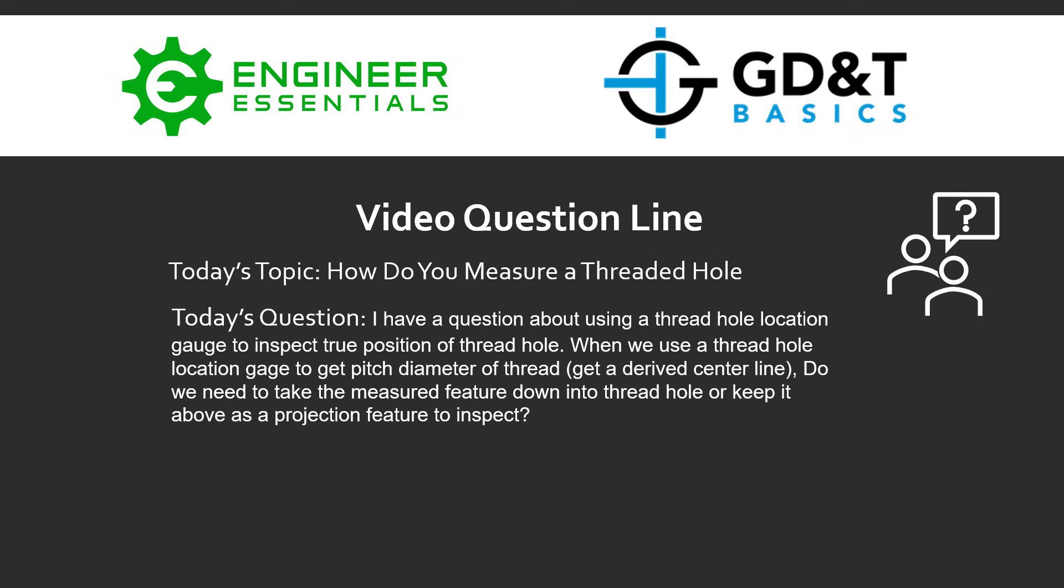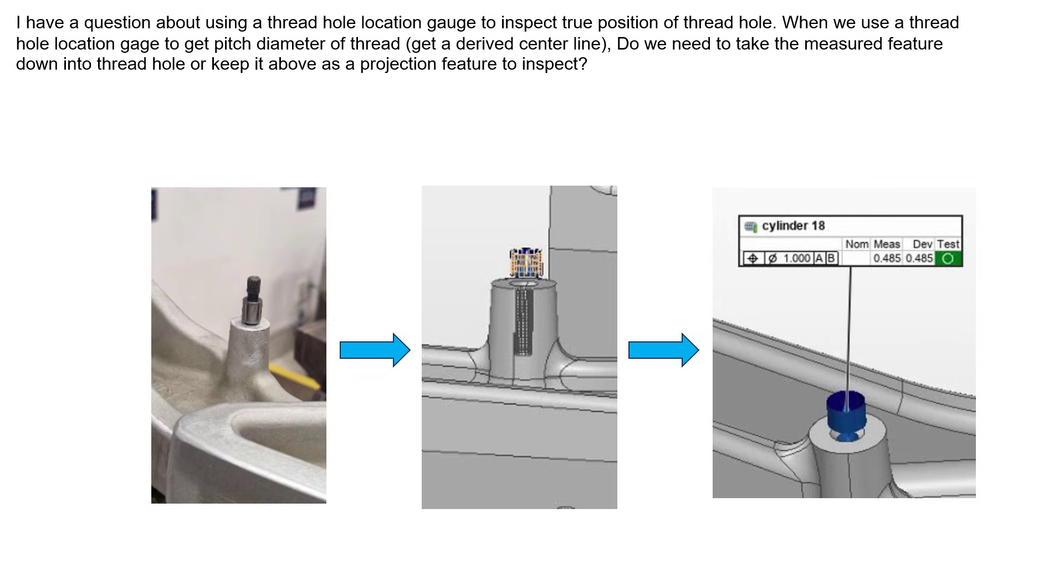This is a great conversation that brings up considerations for both the design side and the inspection side. The pictures submitted from the student are actual pictures during the measurement process. We have this threaded hole location gauge. There are different variations of these gauges, but the essence is it's got the male thread if you're trying to inspect a female threaded location.